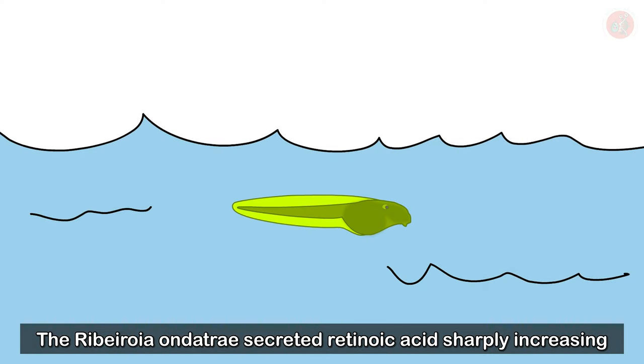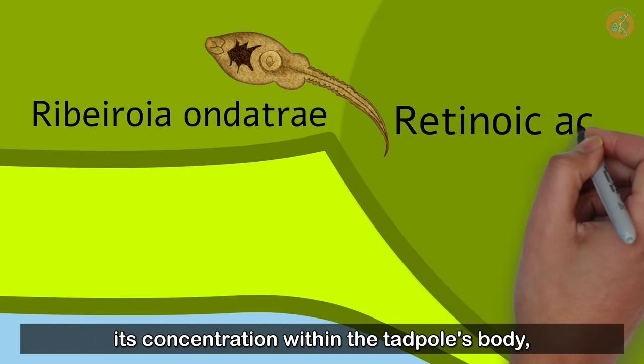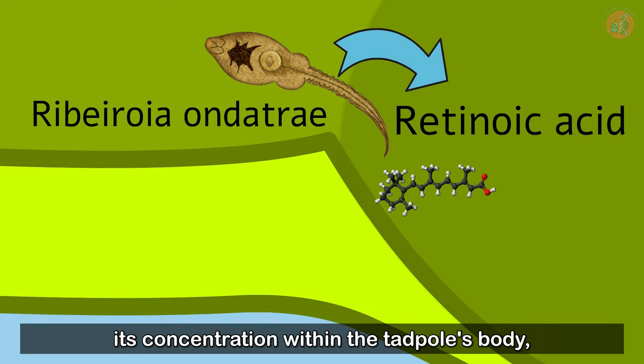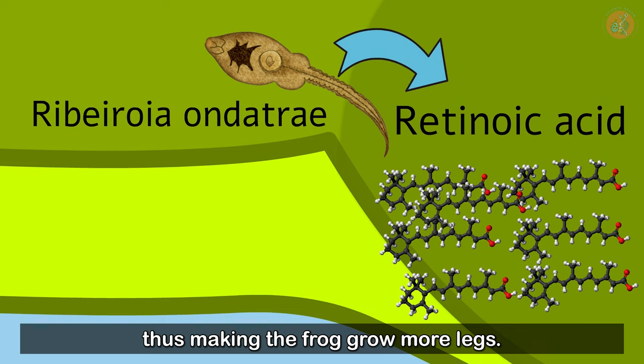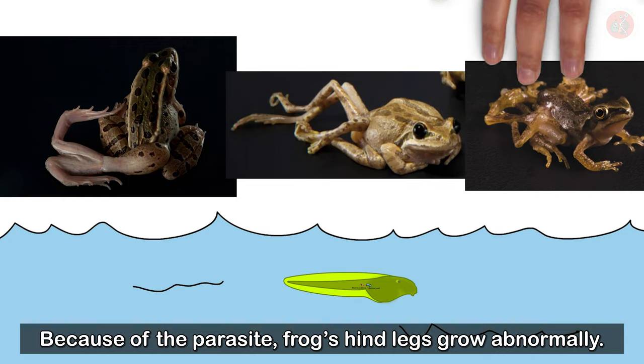The Ribeiroia ondatre secreted retinoic acid, sharply increasing its concentration within the tadpole's body, thus making the frog grow more legs. Because of the parasite, the frog's hind legs grow abnormally.